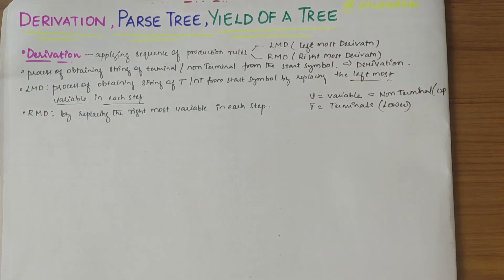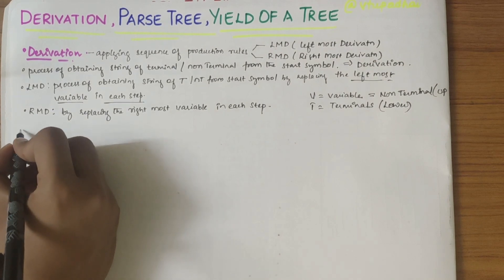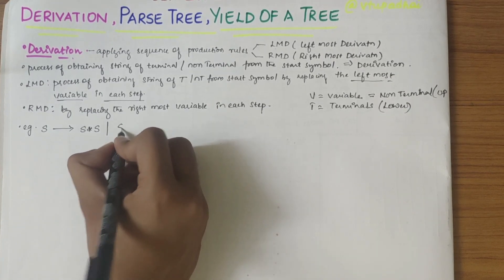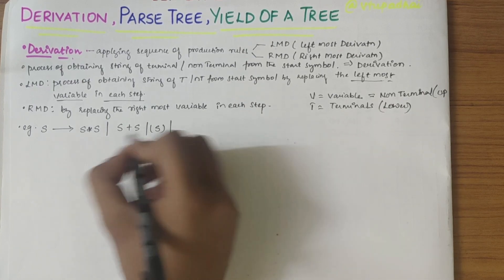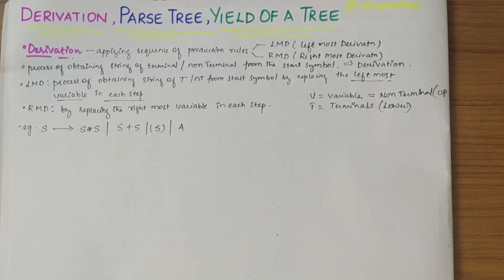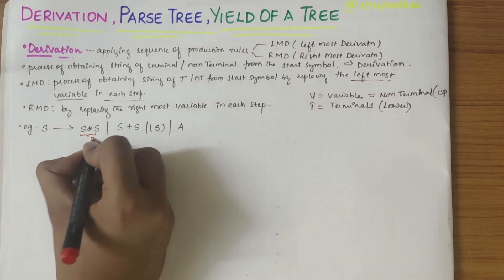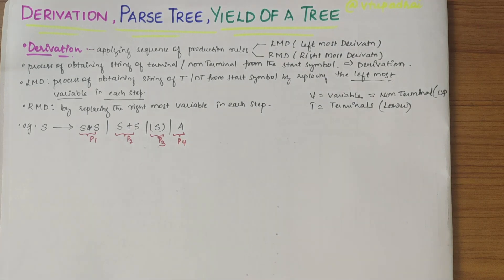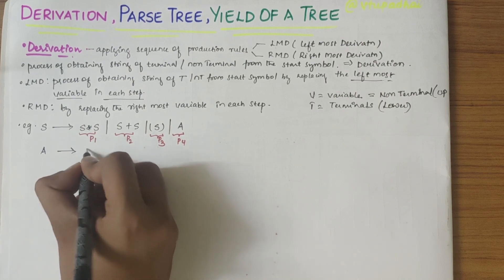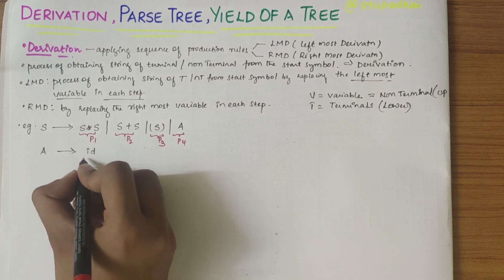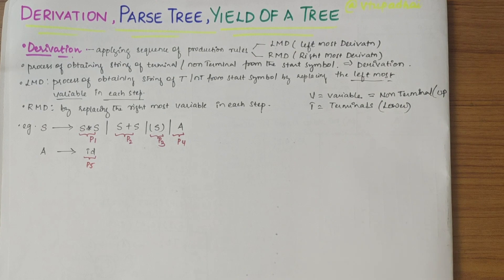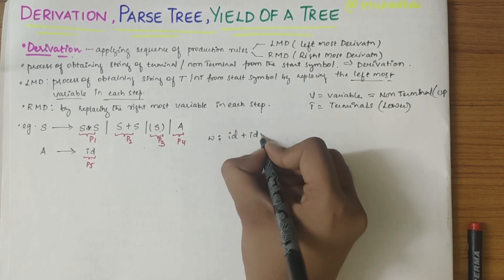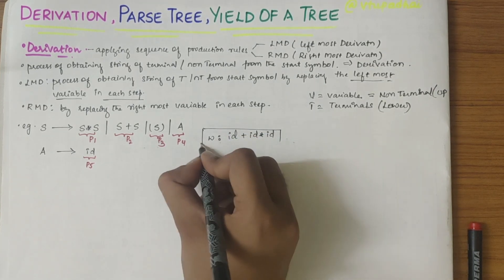These are the definitions of LMD and RMD. Now let's consider a production: S derives S*S (P1), S+S (P2), S enclosed in parenthesis (P3), and A (P4). Along with this we have A derives id (P5). Using these two sets of grammar, we need to obtain the final sentence w = id+id*id.